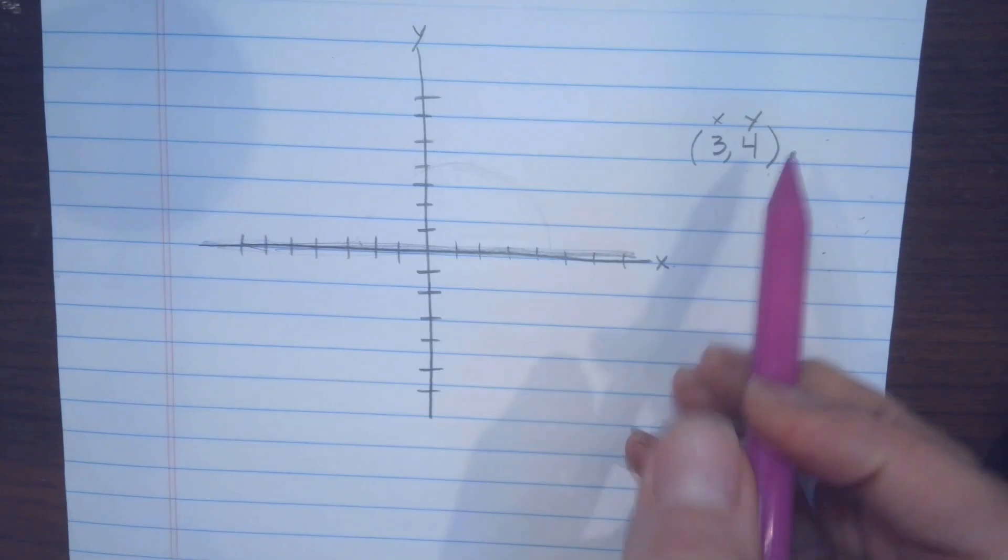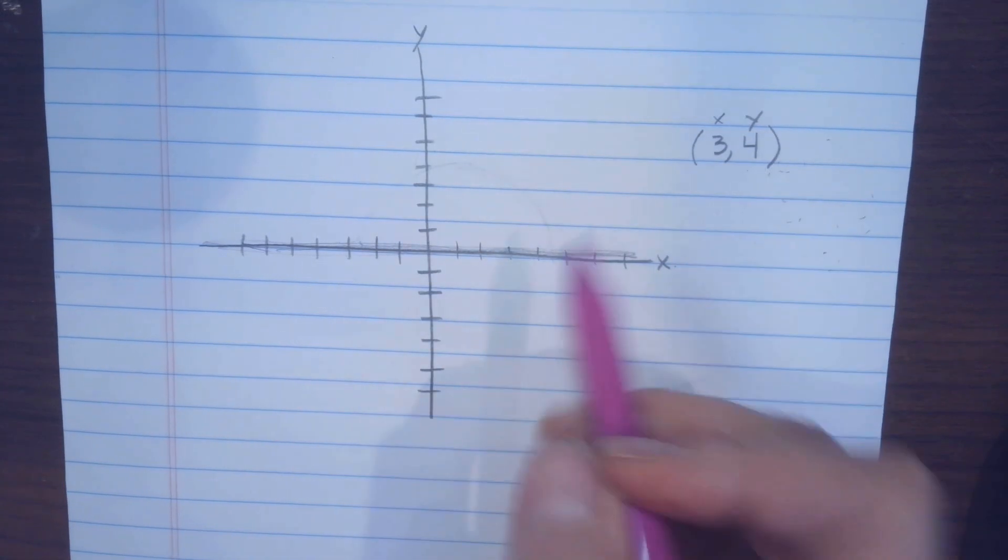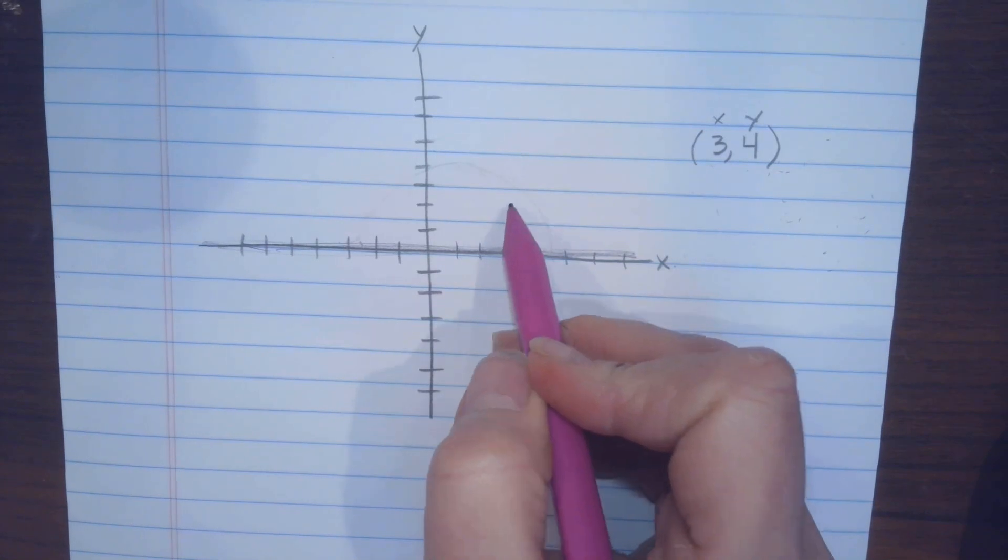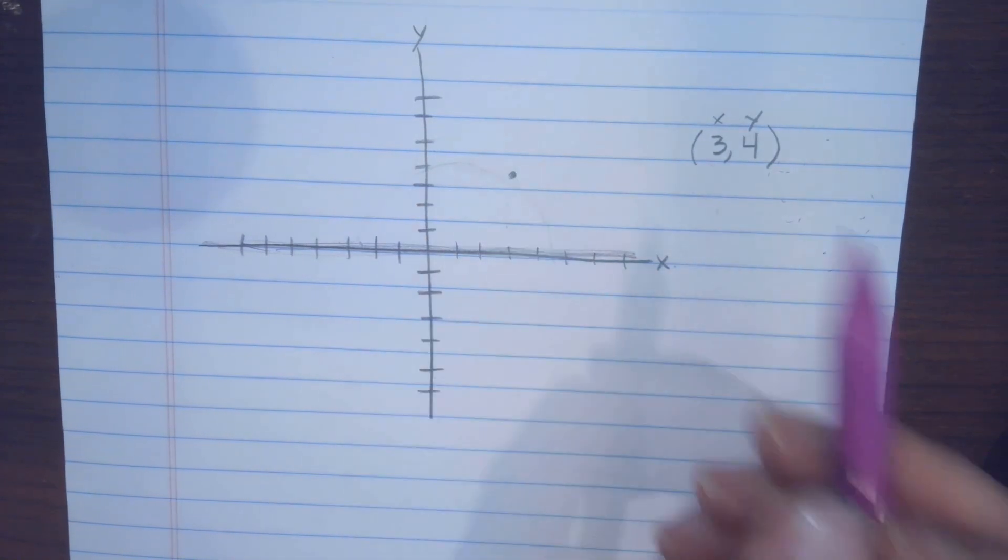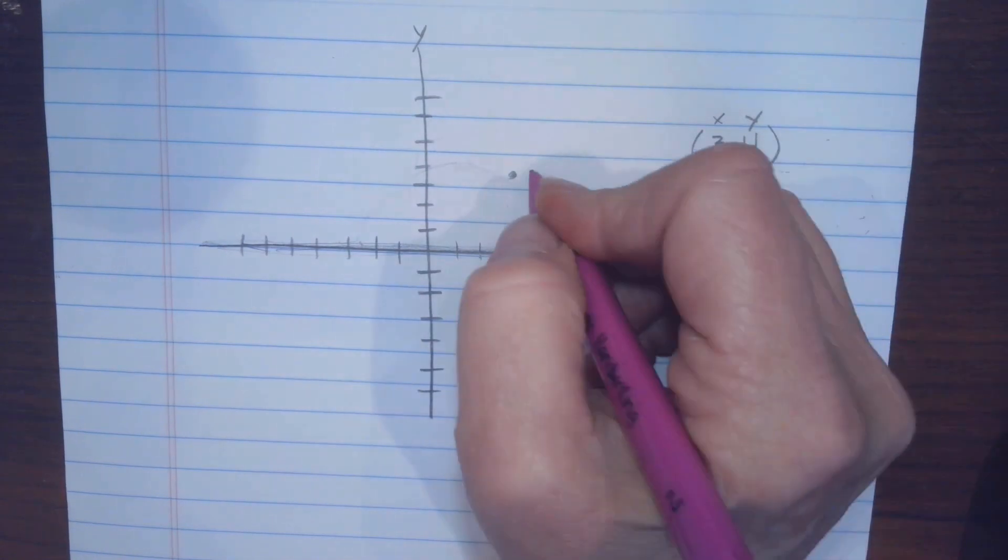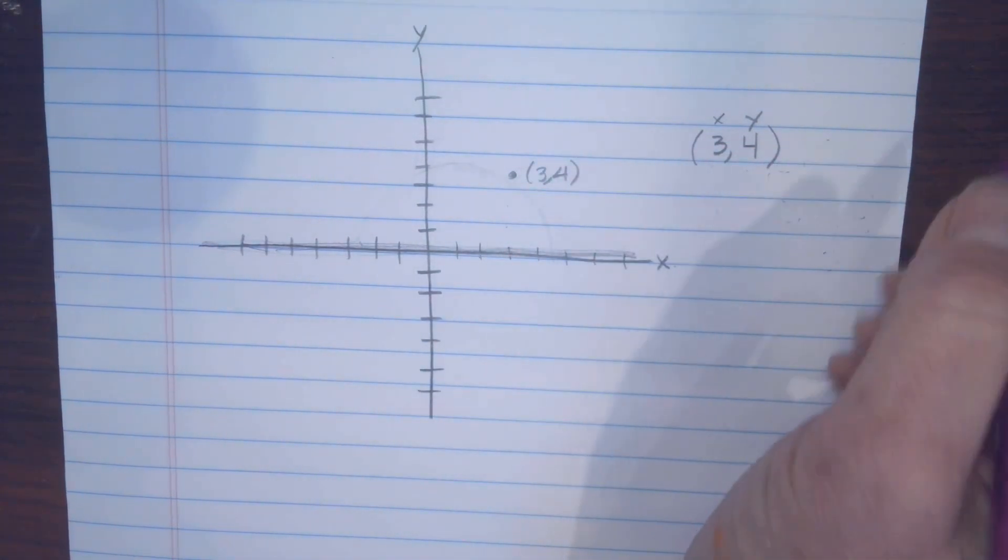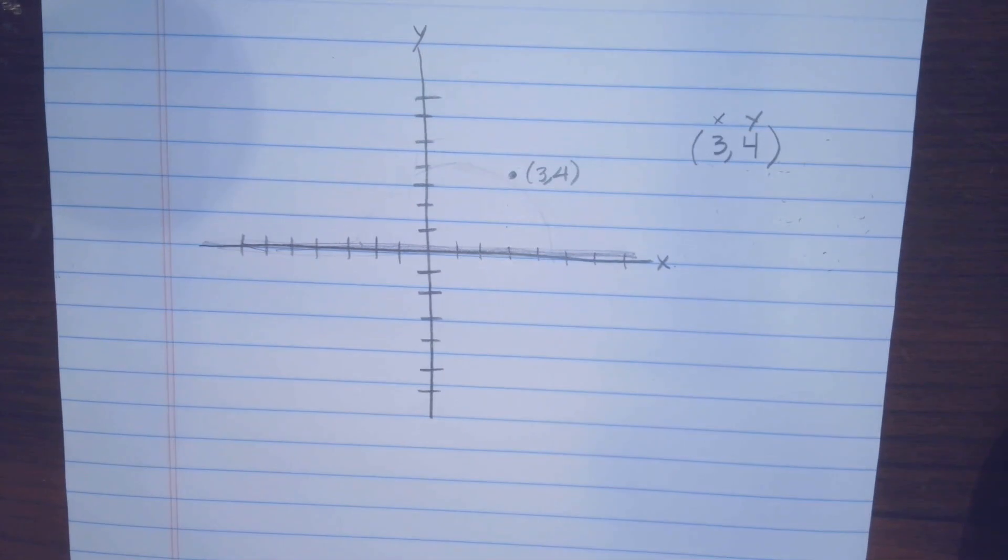So if you did (3,4), you're going to go over 1, 2, 3, and then you're going to go up 1, 2, 3, 4, and then you're going to place your point. And it's good to label it like this, (3,4), so that you can remember what that stands for.